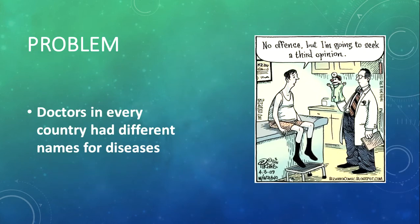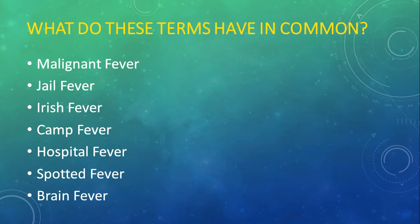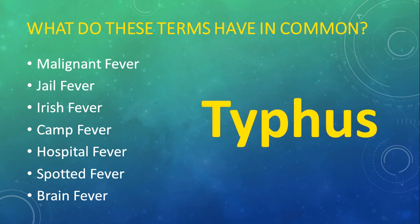With everyone around the world dying of different diseases — or the same disease but with different names — it's hard to take statistics from one country and compare them to another if you're not using the same terms. For example, we have a bunch of different fevers: malignant fever, jail fever, Irish fever, camp fever, hospital fever, spotted fever, and brain fever. What do they all have in common? They are all ways to describe typhus.